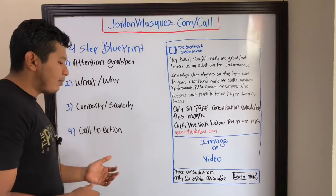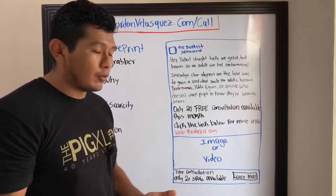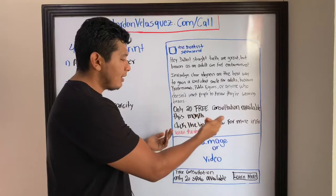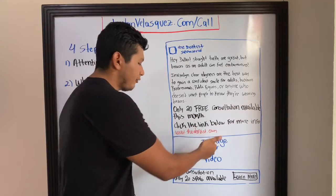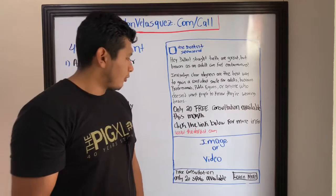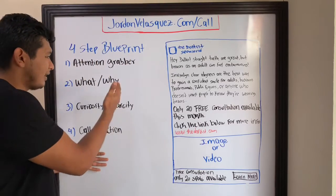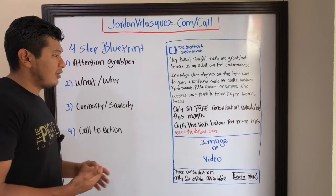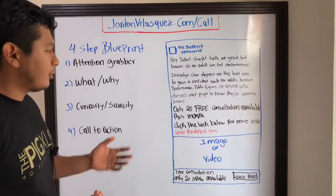Step four is the call to action. People love being told what to do, so put something like: 'Click the link below for more info.' Include the URL of your website or landing page. That's basically the structure — it's really simple.